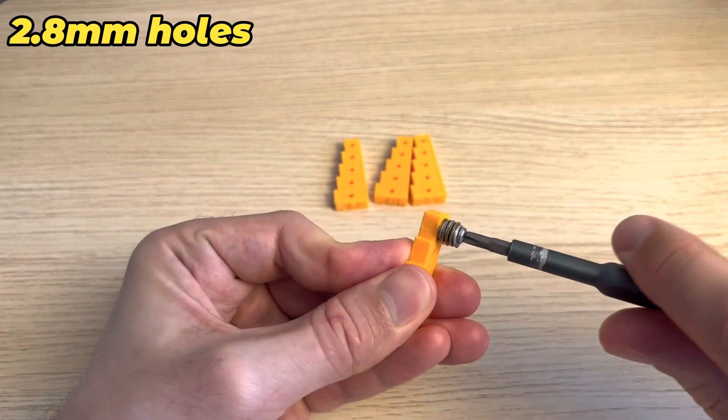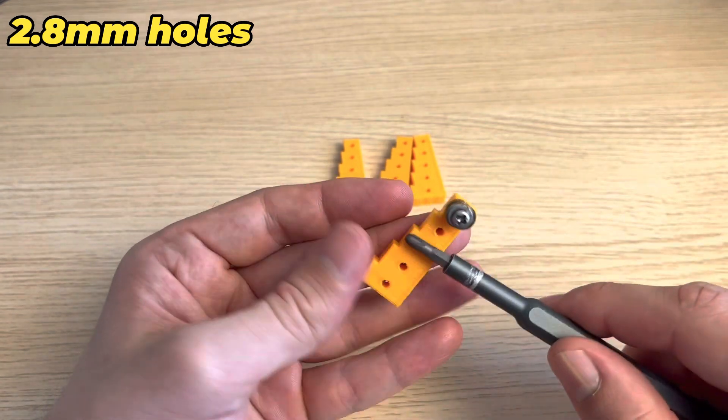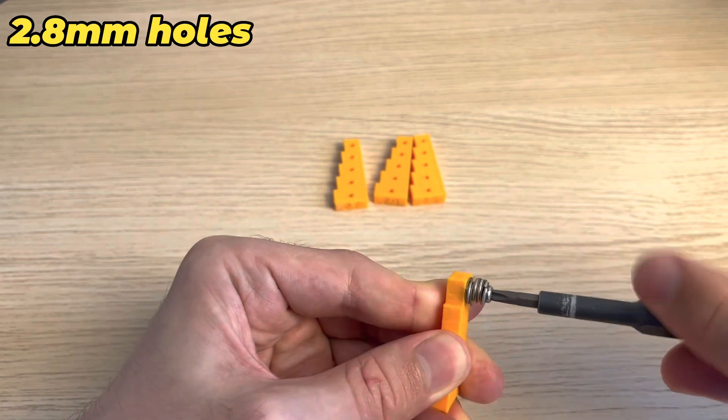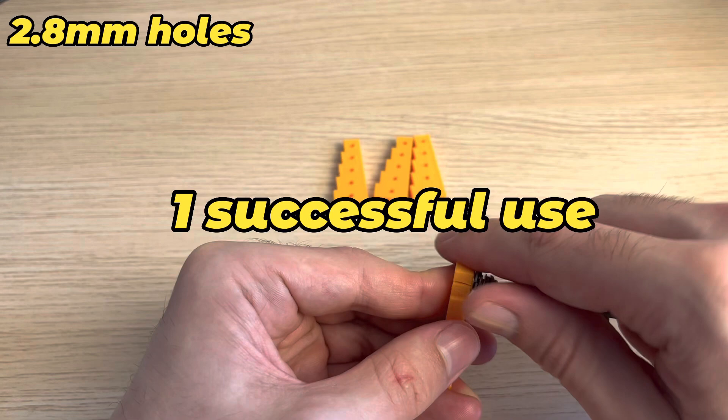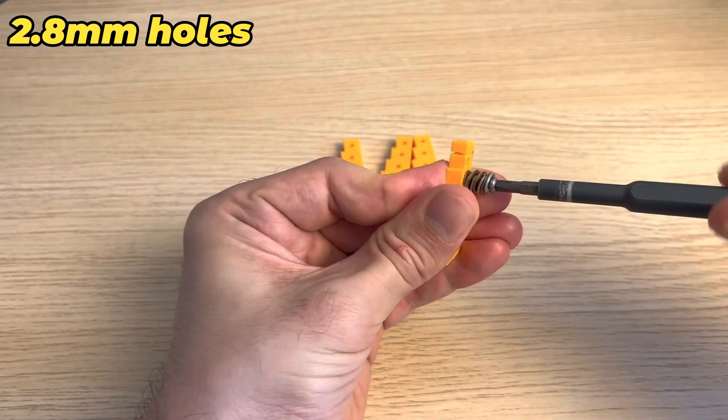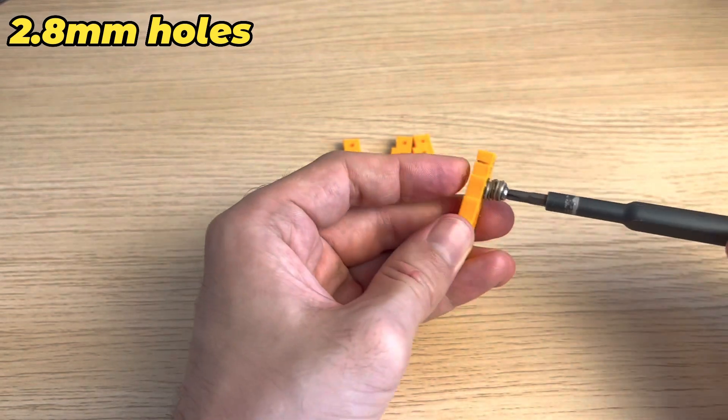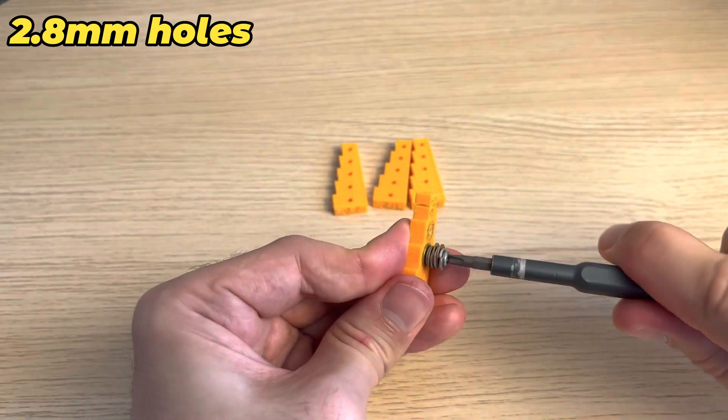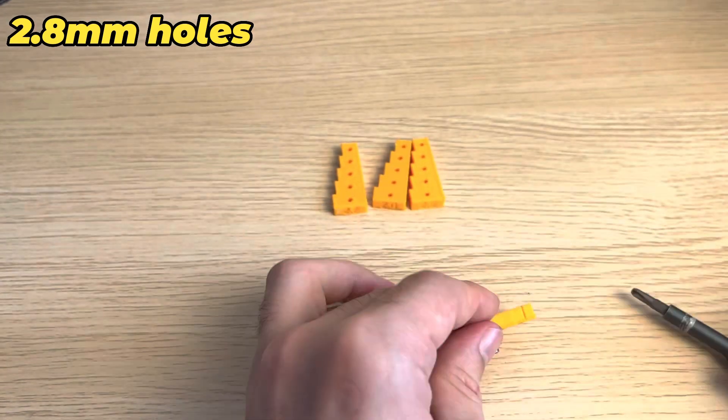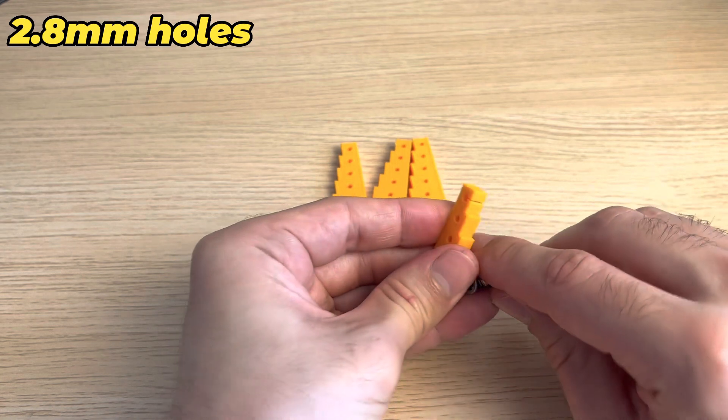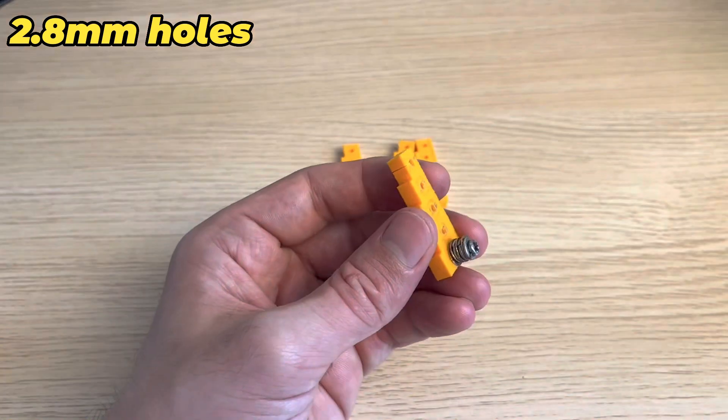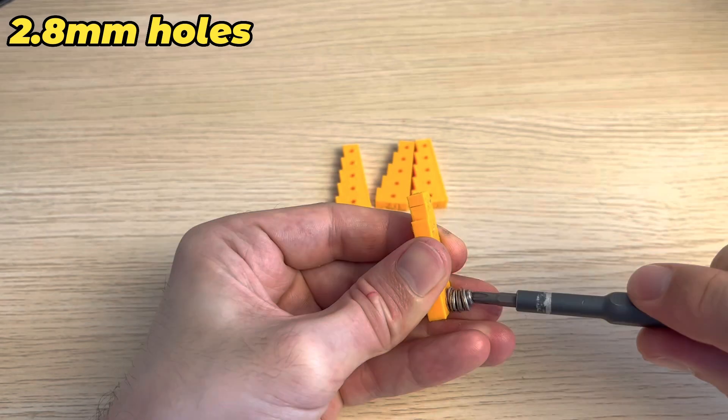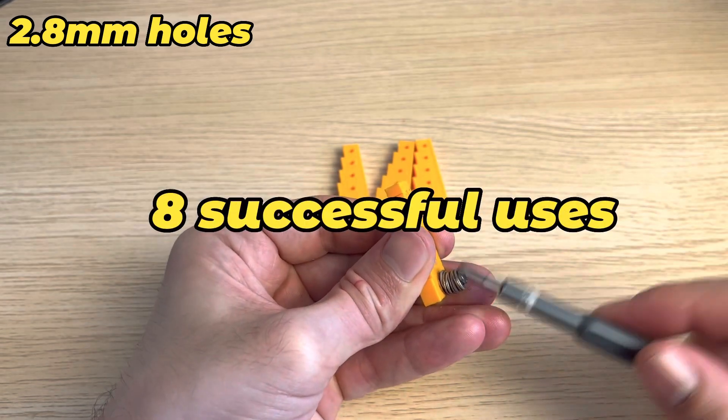We only got one successful use there. Now for the second hole, we've got five good ones. For the third hole, 10 uses before this one's stripped out. And now for the fourth hole, and it's stripped out. So we've got eight uses out of this hole. And now hole number five. And it's stripped out. So we got eight good uses.